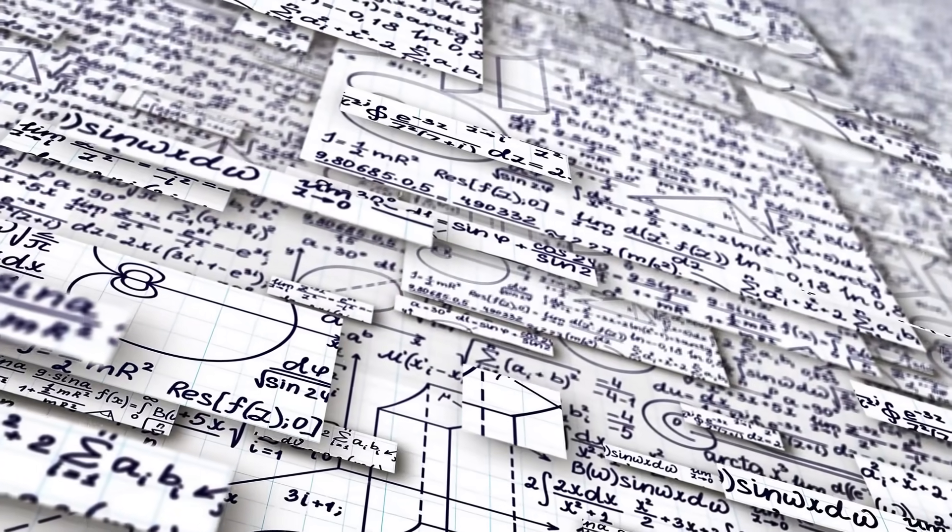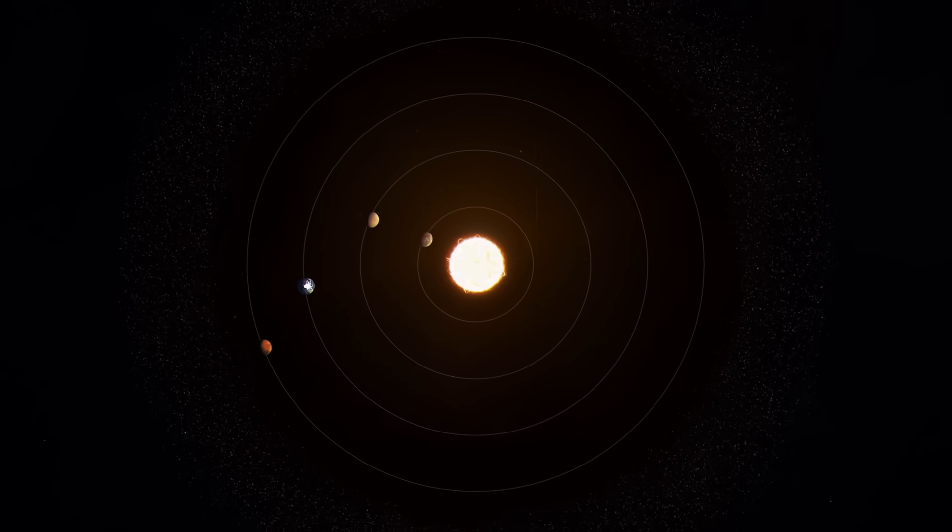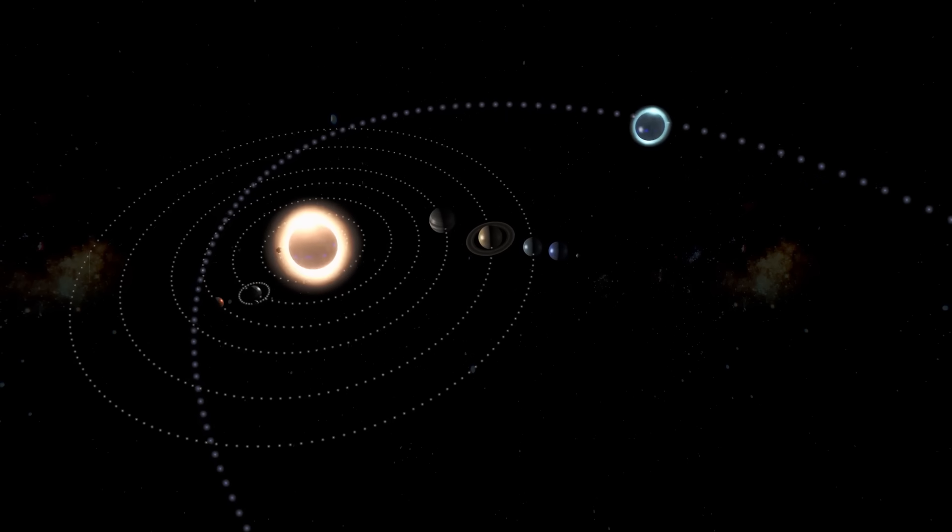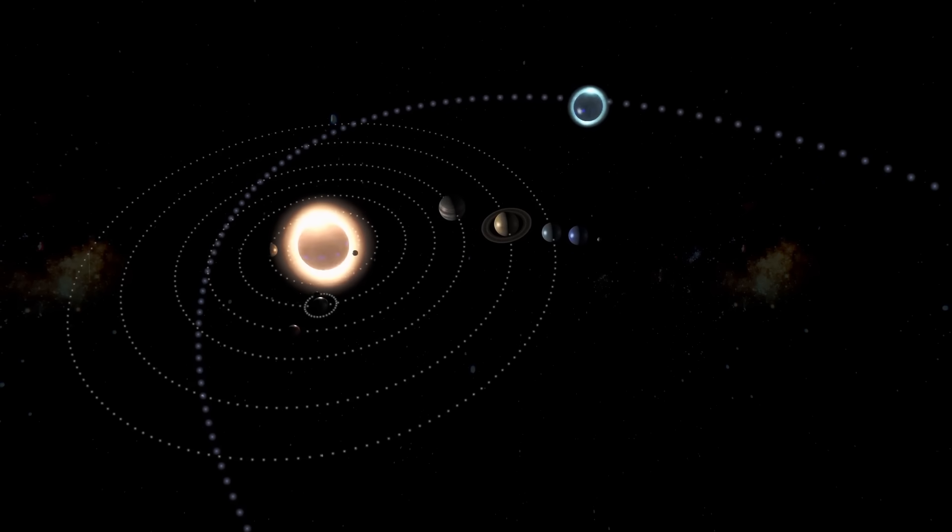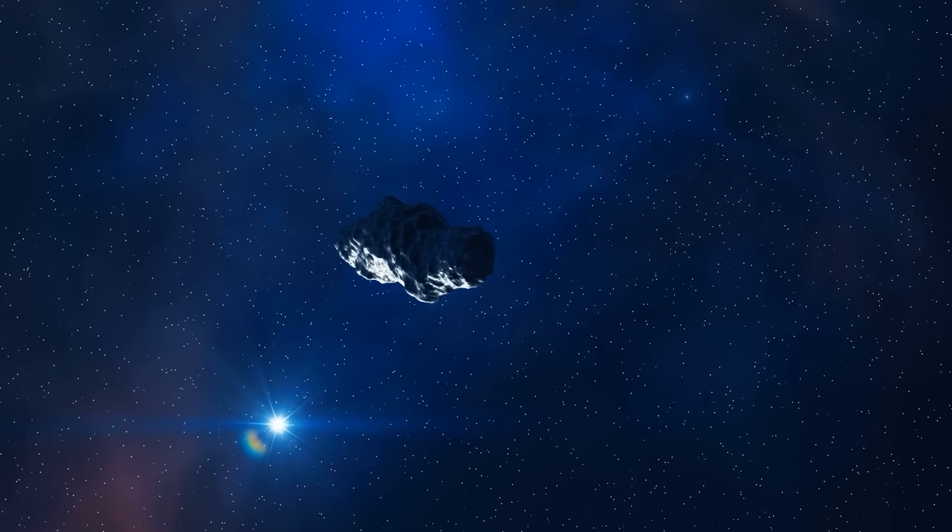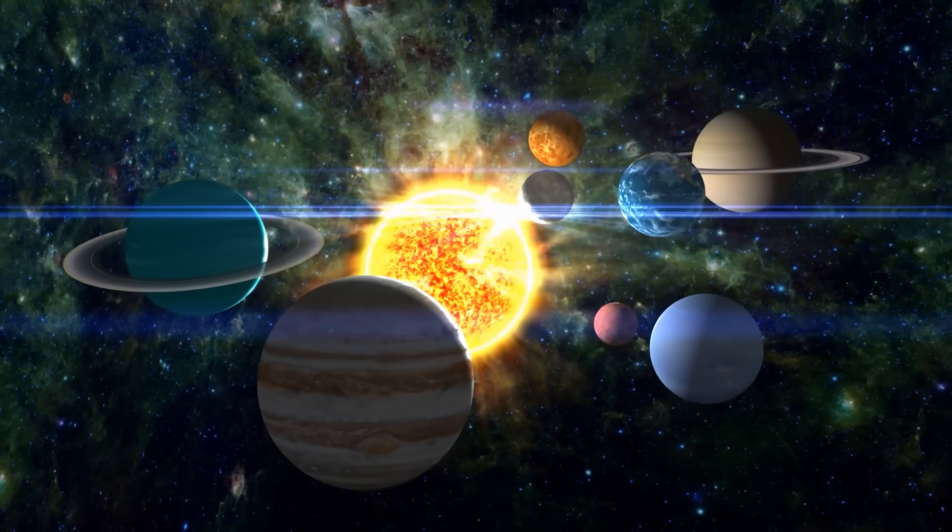In the scientific literature, the probability of such an exact alignment is given as less than 1%. Interstellar visitors would have to cut across the solar system at steep angles and then move away again on hyperbolic trajectories. Atlas, on the other hand, glides along at breakneck speed and almost parallel, as if it had deliberately joined the stream of planetary orbits.